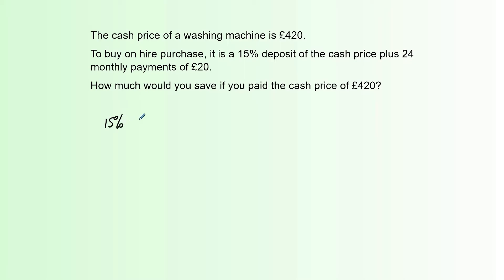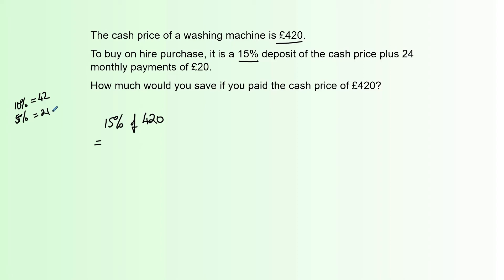We need to find 15% of the cash price, which is £420. Going non-calculator, the best way is to find 10% first: 10% of £420 is £42. Then 5% is half of that, which is £21. Add them together — since 10% and 5% make 15% — and that gives us £63.